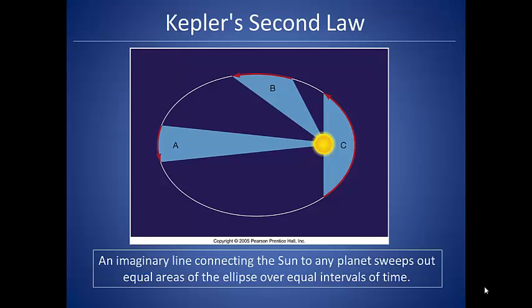Kepler's second law says that an imaginary line connecting the sun to any planet sweeps out equal areas of the ellipse over equal intervals of time. Alright, so this boils down to equal areas in equal time.